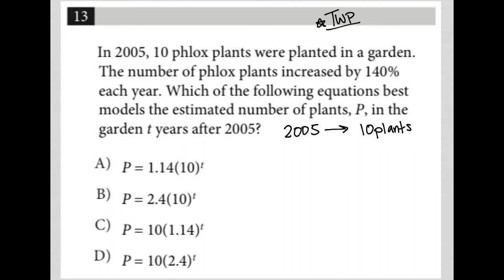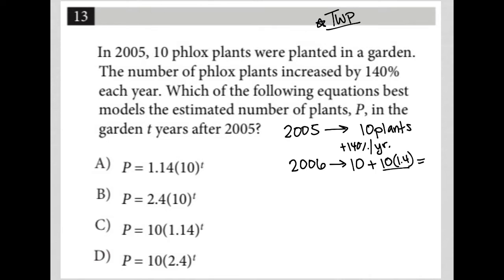The next sentence says the number of phlox plants increased by 140% each year. So I know I'm going to add 140% per year. For 2006, that would mean I'd have the 10 plants from the previous year, but I'm adding 140% of that number, which means I'm multiplying that 10 by 1.4. That gives me 14 plus 10, so 24 plants.